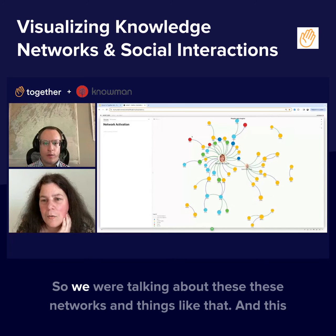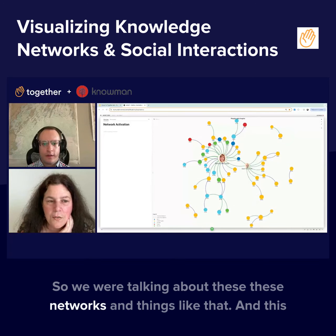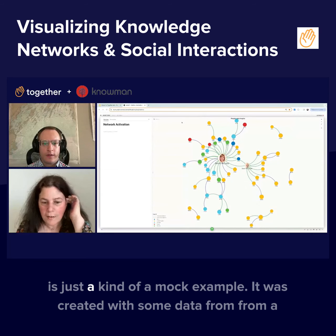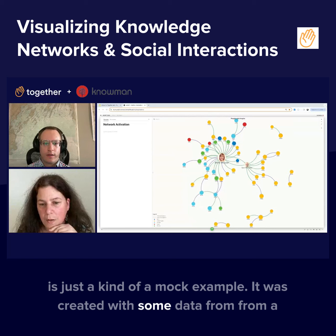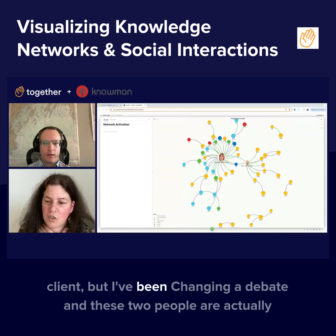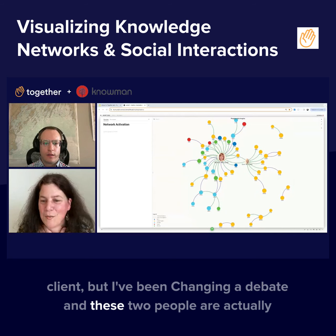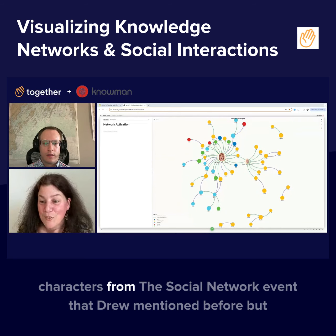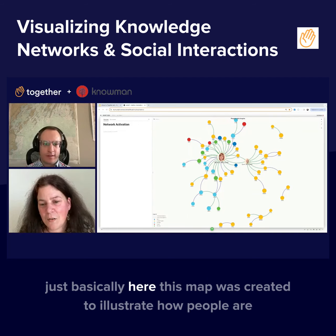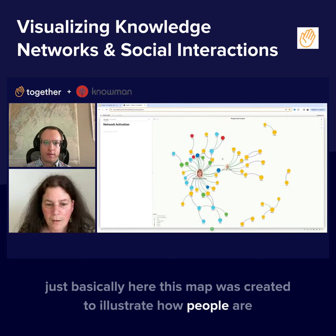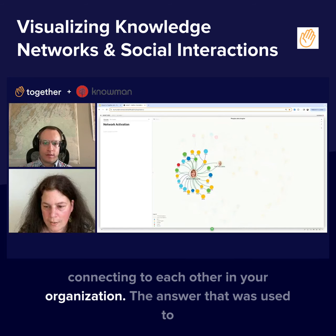We were talking about these networks. This is a mock example — it was created with some data from a client, but I've been changing it a bit. These two people are actually characters from the Social Now event mentioned before. Basically, this map was created to illustrate how people are connecting to each other in the organization.